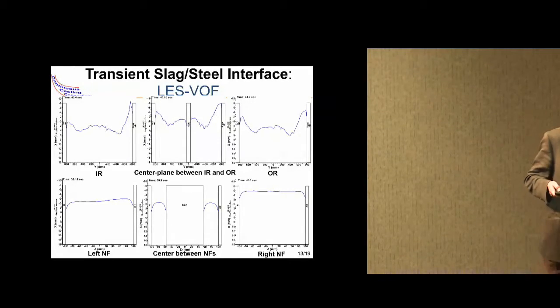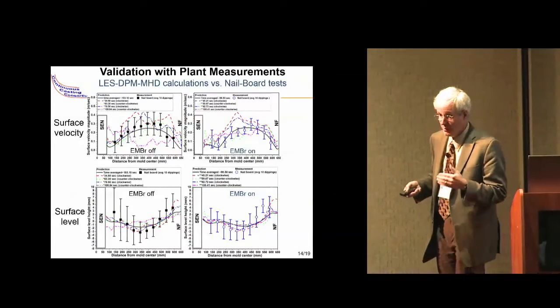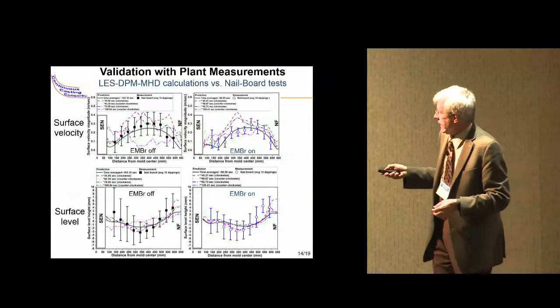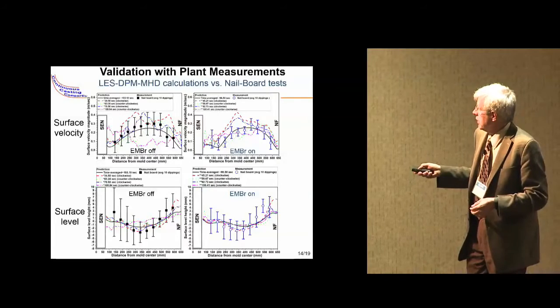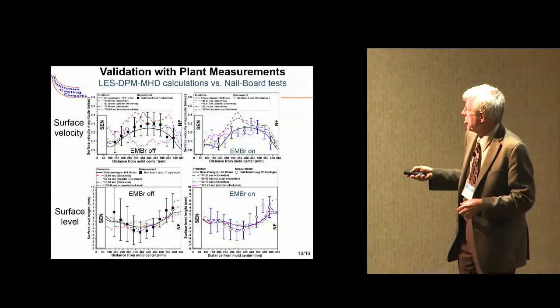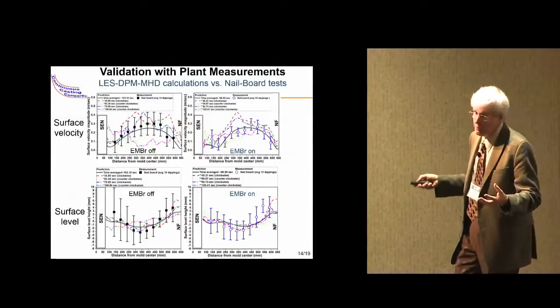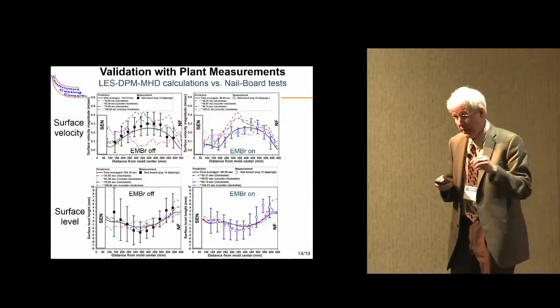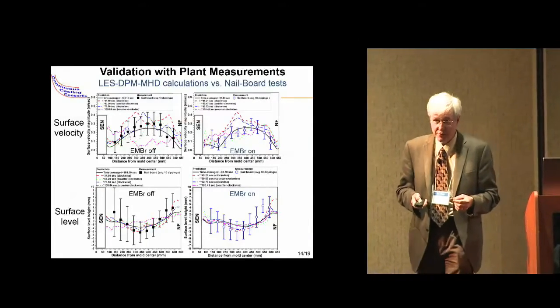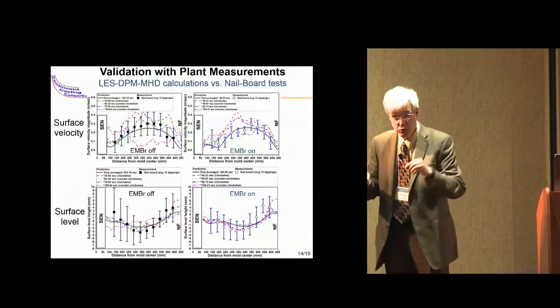We want to know if this actually happens in the plant, so we did measurements of the surface. There's our time average line in black, our measurements are these points, and there's the variation of the measurements. Our instantaneous velocities fit within the variation of the measurements and the average matches. We're very pleased that this model is quite accurate and can simulate the real process.